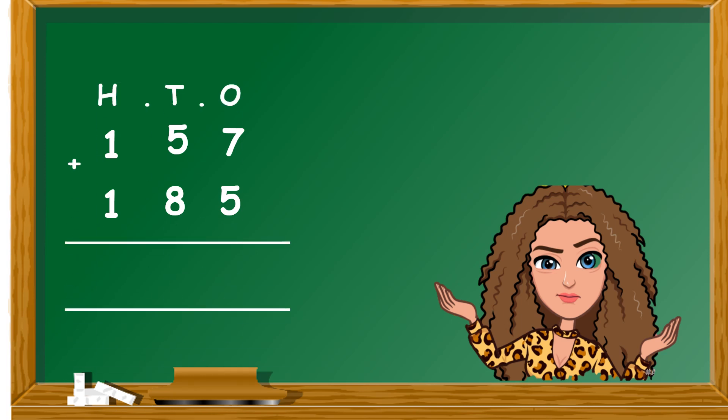This is the problem we are going to do today. Let us read it: 157 add 185, and we are going to do it how we learned to do it. So, we know that first we add the ones column, so we have 7 add 5. So, 7 add 5 will give us 12. We take the 2 and we put the 2 in the ones column.